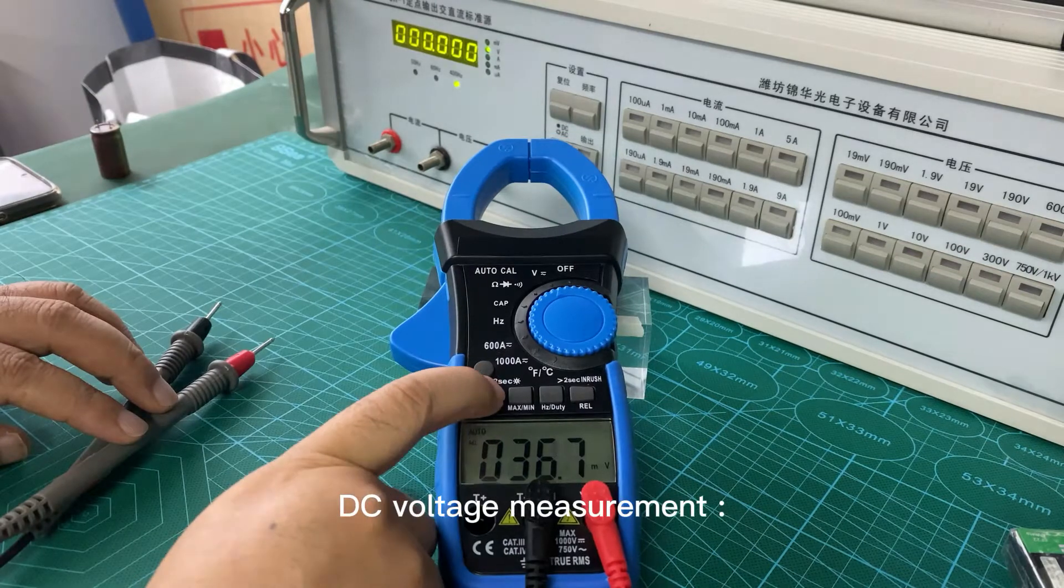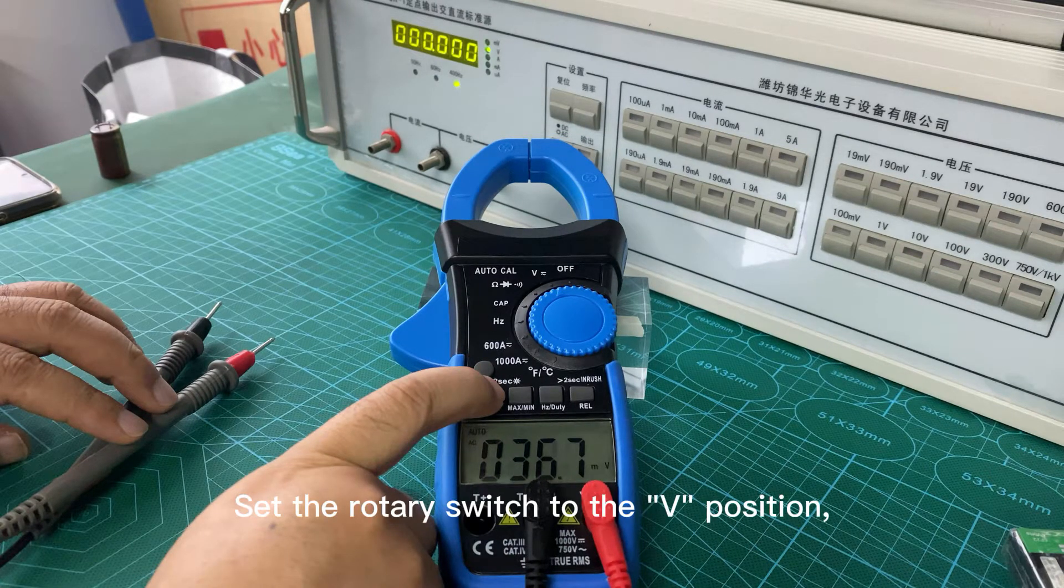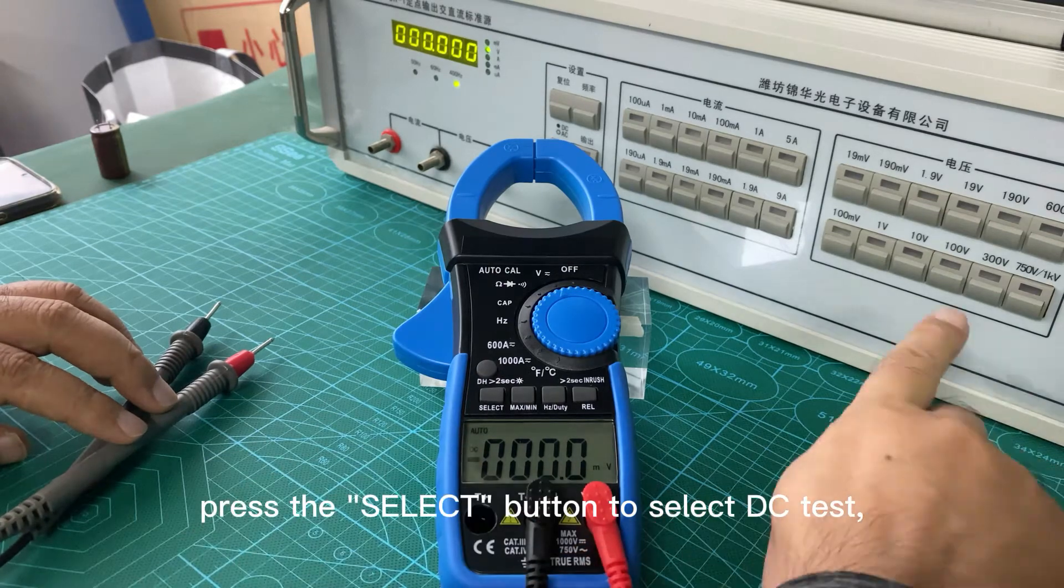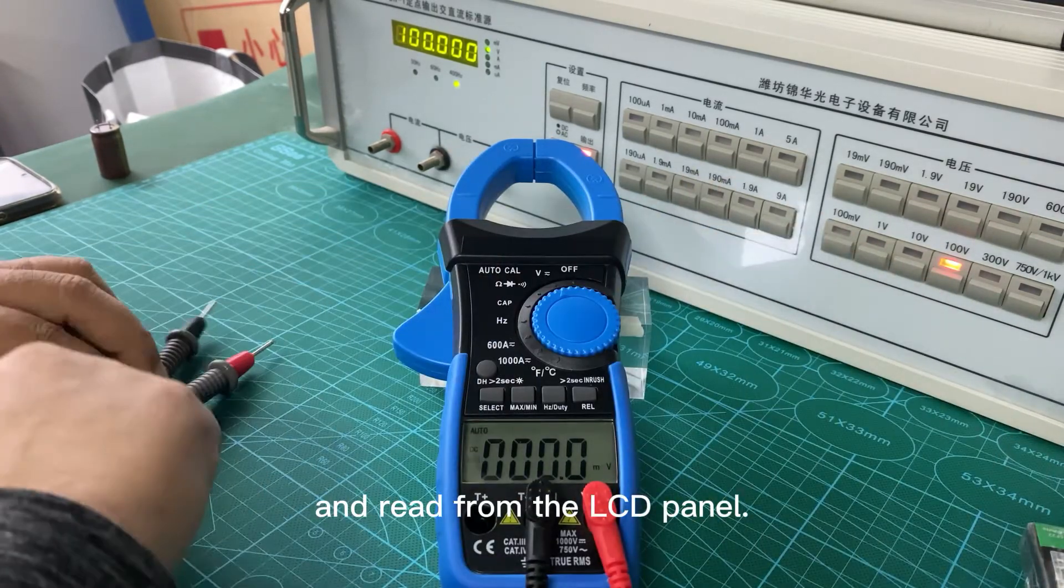DC voltage measurement: Set the rotary switch to the V position. Press the select button to select DC test and read from the LCD panel.